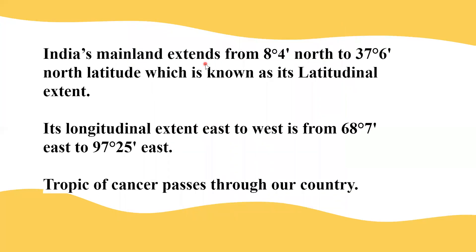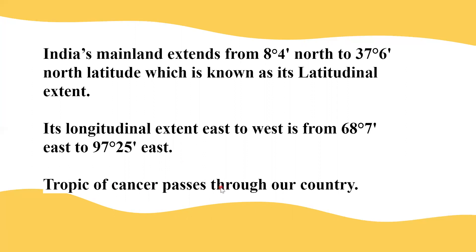India's mainland extends from 8 degrees 4 minutes North to 37 degrees 6 minutes North latitude — that is the latitudinal extent. The longitudinal extent is from 68 degrees 7 minutes East to 97 degrees 25 minutes East. These extents show the exact position of the place. The latitude line that passes through our country is called the Tropic of Cancer, which exactly divides our country into two halves — northern and southern. According to our planet Earth, India is located in the Northern Hemisphere.